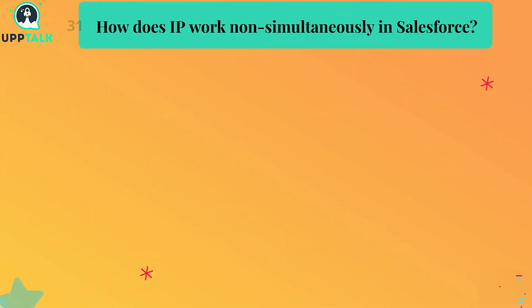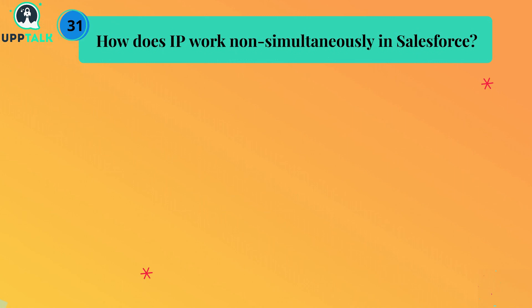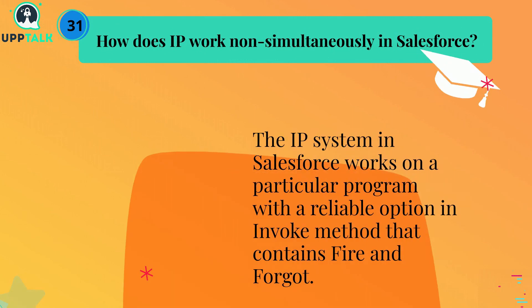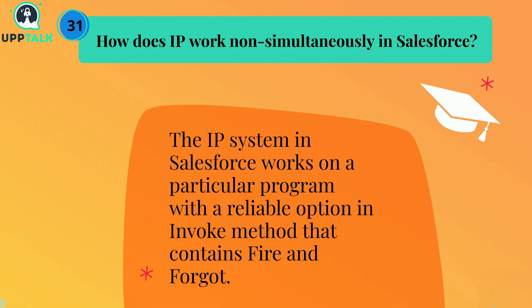How does IP work non-simultaneously in Salesforce? The IP system in Salesforce works on a particular program with a reliable option and invoke method that contains fire and forget.